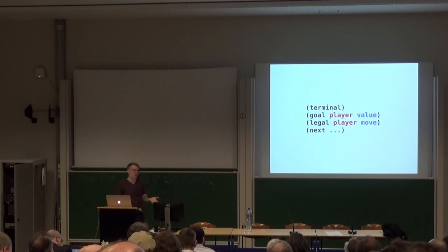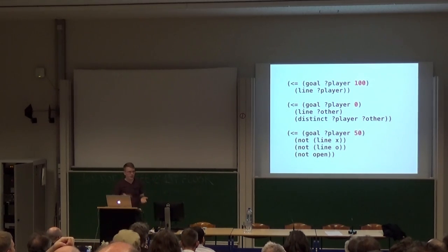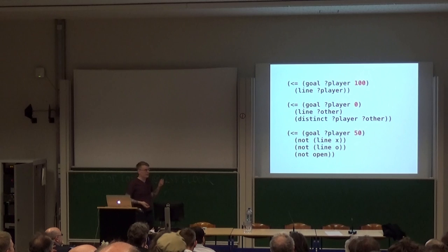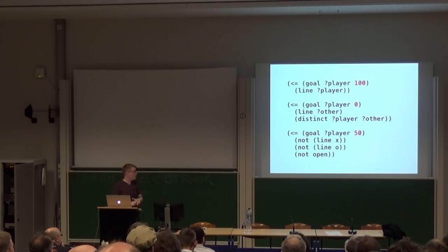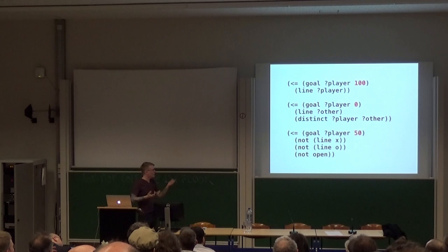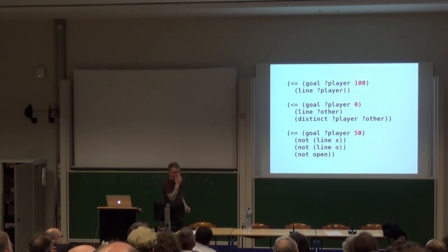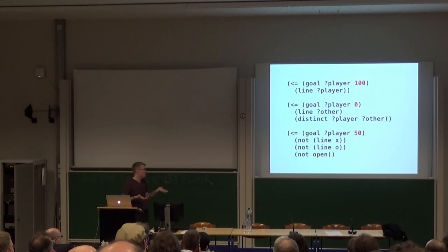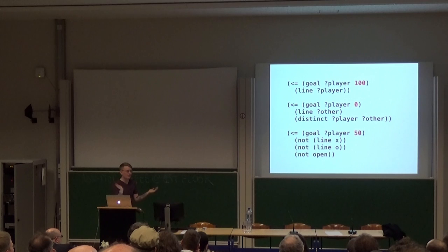The next thing is to say who wins. In GDL, the scores go from 0 to 100, with higher scores being better by convention. A player gets a goal of 100 if they have a line. A player gets a score of 0 if the other player has a line — we need to add this distinct constraint to ensure that 'other' and 'player' don't unify to the same thing. Distinct is a magic GDL keyword that ensures things are not the same. And then if neither player has a line and we're not open, the game is over, everybody just gets a score of 50 — it's a draw.